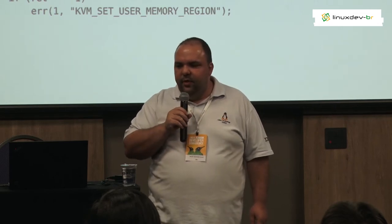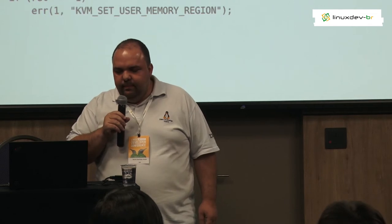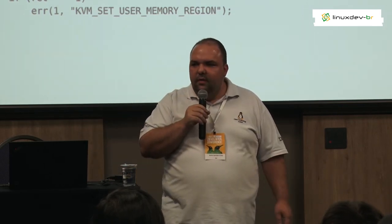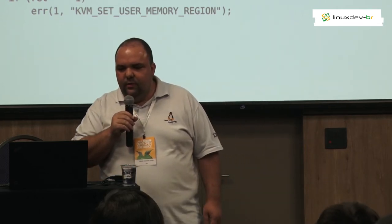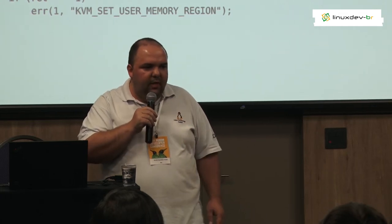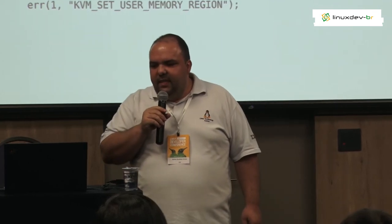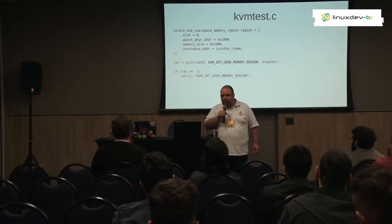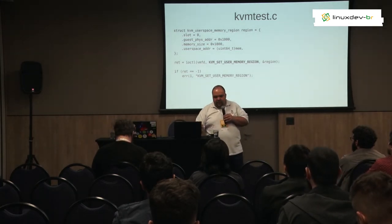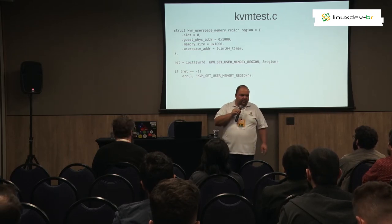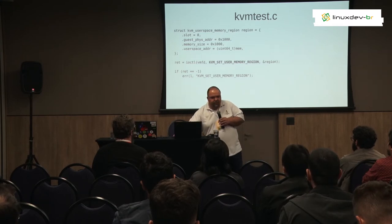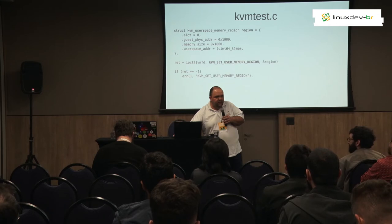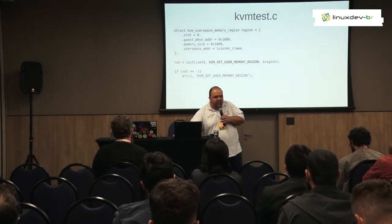This other API is KVM_SET_USER_MEMORY_REGION. It's a struct kvm_userspace_memory_region that you need to fill in and give to the KVM subsystem as an input — that's why it passes the region address to the IOCTL call. It basically sets where the user space memory is for that virtual machine. That's why it uses the VM file descriptor and not the KVM file descriptor, because this is affecting the virtual machine only.